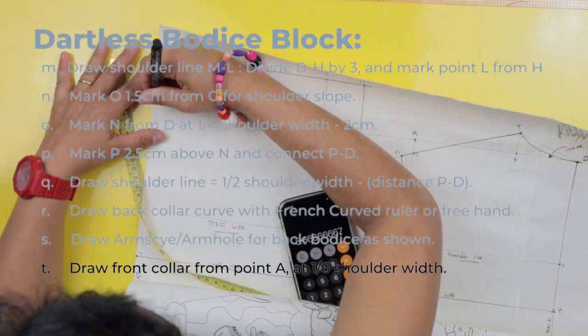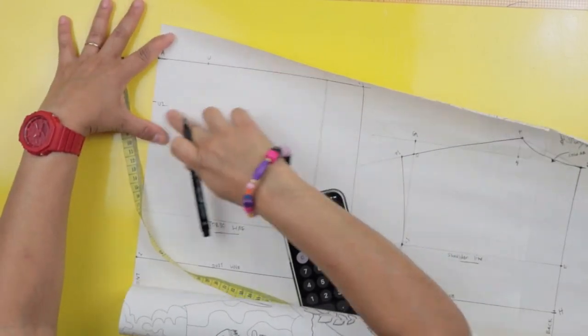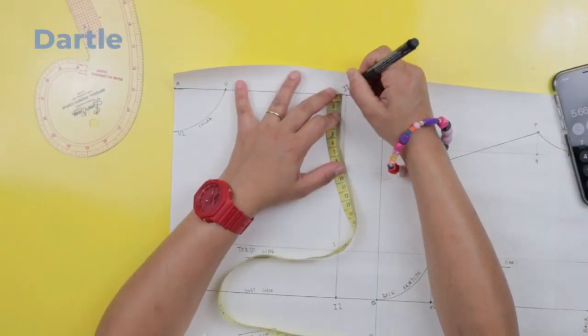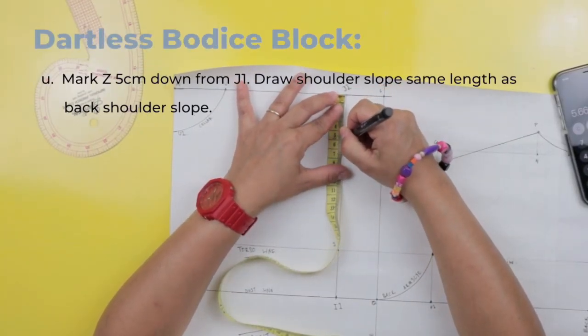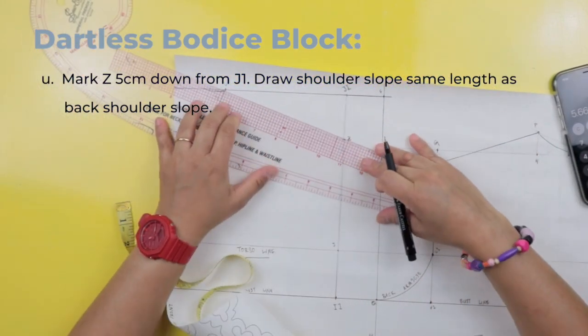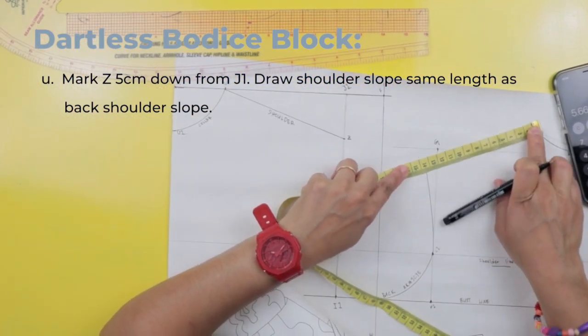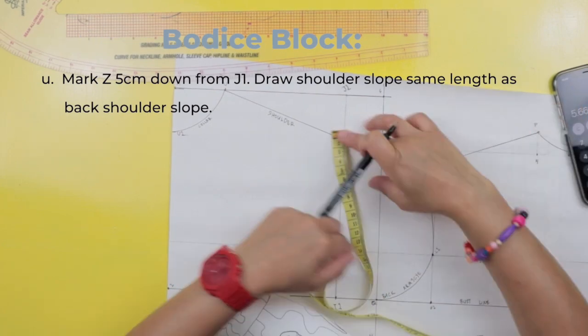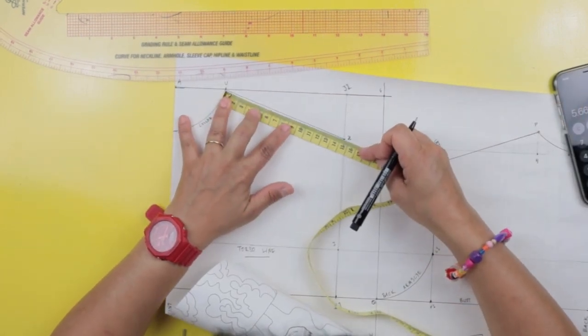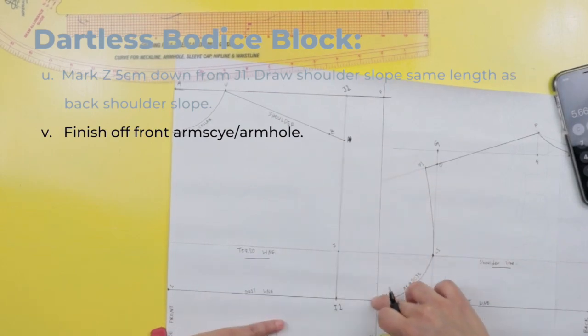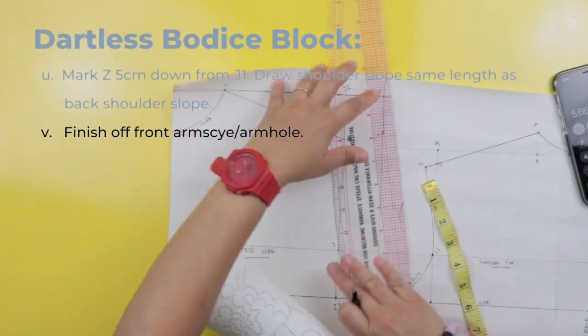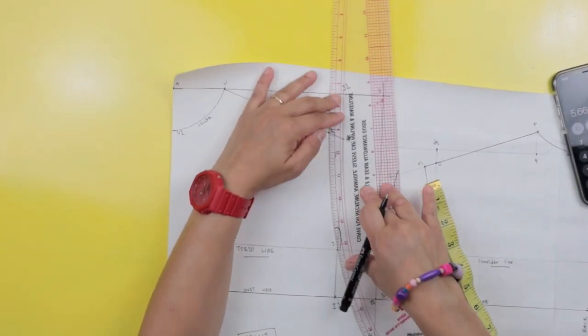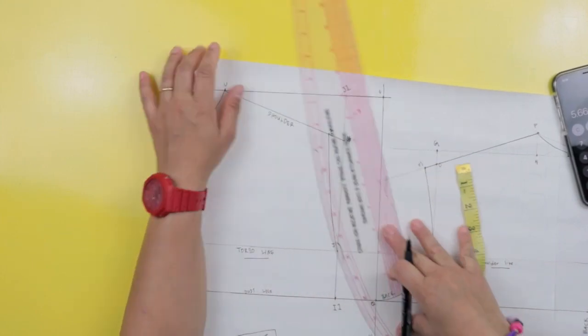Measure 1 fifth your shoulder width from point A and draw a circle or 1 fourth of a circle which will be your front collar. And then mark 5 centimeters down from J1 and draw the shoulder slope. Make sure your shoulder length is the same as the back shoulder length and finish off with drawing your armside, just as you did for the back armside.